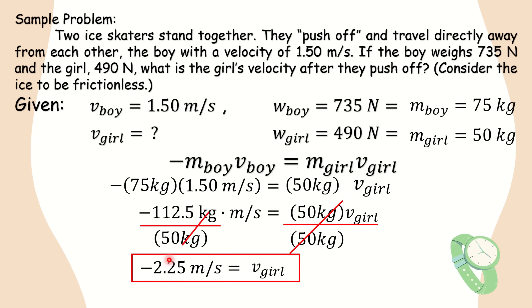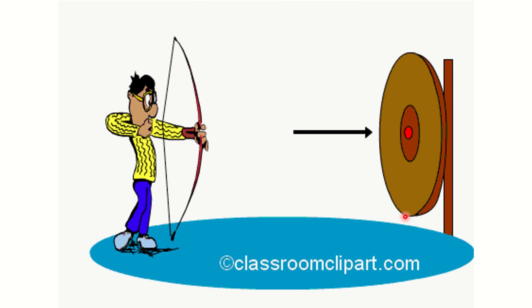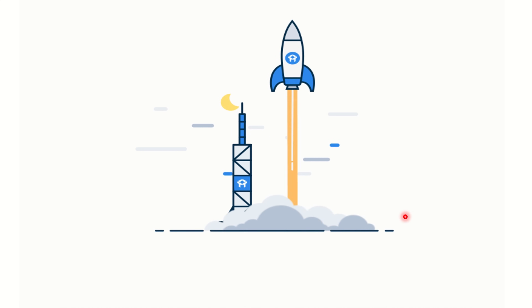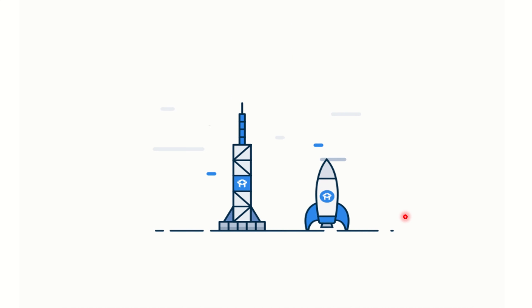Let us check: does the negative sign in the girl's final velocity represent the direction of her motion compared to the boy's? And does the speed of the girl compare reasonably to the speed of the boy? The answer is yes. They have different speeds — the boy at 1.50 m/s and the girl at 2.25 m/s — simply because they have different masses. However, they do have equal momentum. Other examples include: when you shoot an arrow, the recoil of the bow has equal and opposite momentum to the arrow; and when you launch a rocket, the exhaust pushes it forward in equal and opposite measure.